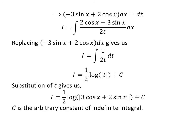Let us substitute t in terms of x. As we had assumed t is equal to 3 times cosine of x plus 2 times sine of x, so i is equal to one-half times the natural log of the absolute value of 3 times cosine of x plus 2 times sine of x plus capital C.